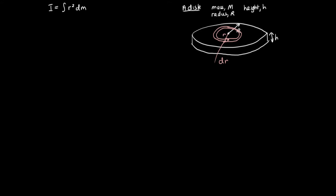In order to substitute into the moment of inertia equation and work out how this little ring contributes, we need to know the mass of the little ring. So dm equals the mass of the little ring, which equals the density of the disc — assuming uniform density — times the volume of the little ring.